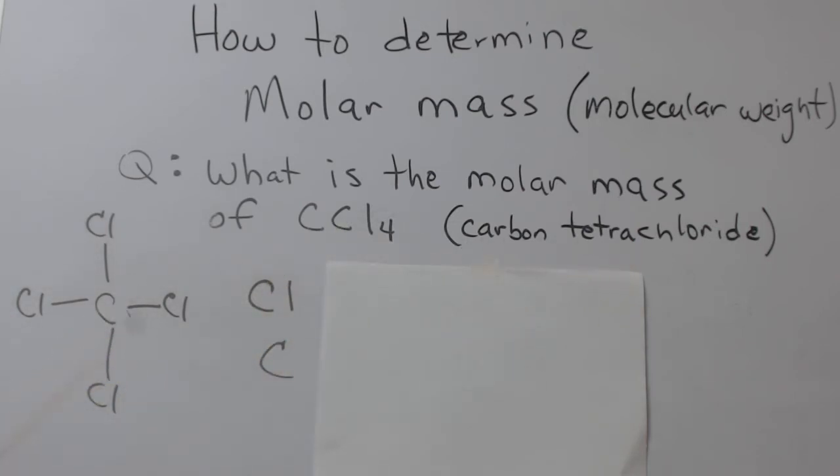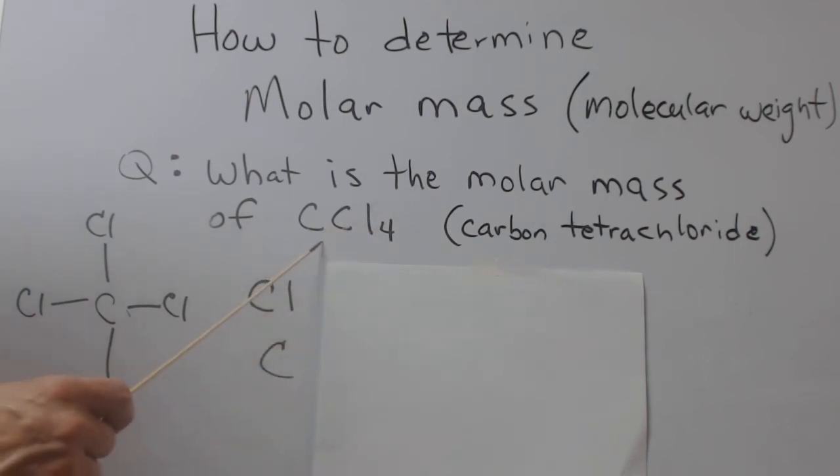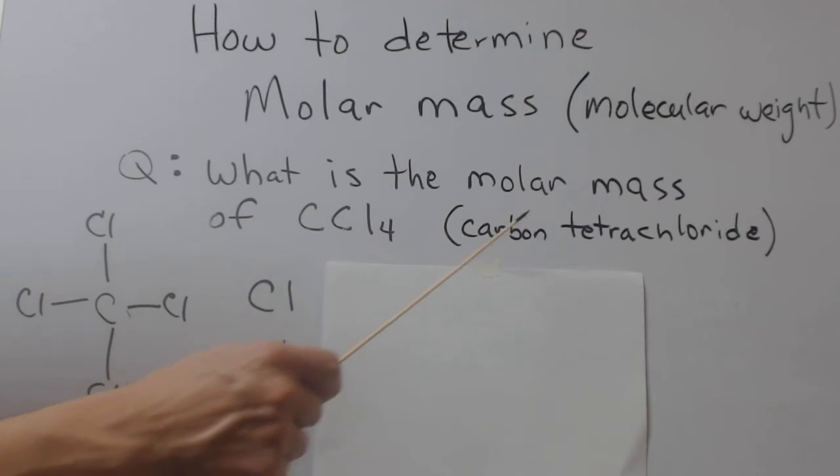A little nomenclature for you here. Since they're both non-metals, we don't use any Roman numerals to describe the oxidation state of carbon. No need for any of that. You just use the prefixes. In this particular case, since it's four, it's tetra.